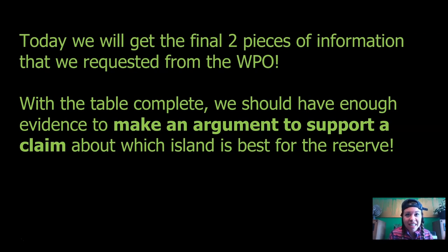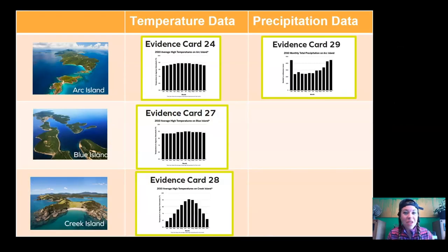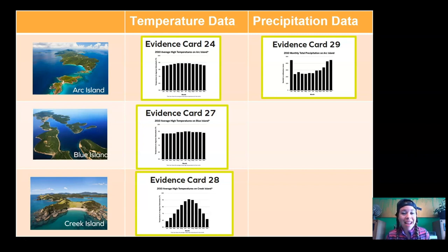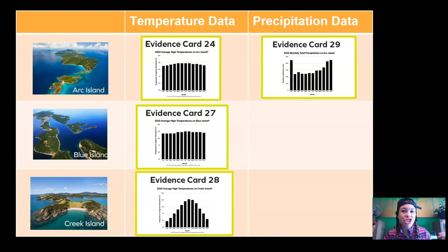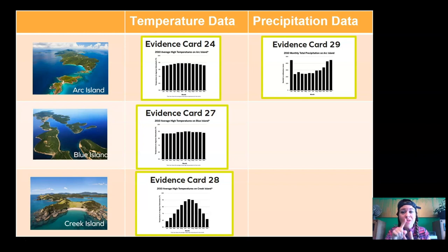We've been working so hard to get to this point. You remember that in the last episode, we took all of our evidence and we organized it into temperature data and precipitation data. We decided that in order for evidence to be considered strong evidence towards our claim, it has to be a year's worth of data. We can't make a decision about where to put the orangutan reserve based off one day or one month of data, because temperature and precipitation can change seasonally. We need a place that is hot and rainy all year long in order for the orangutans to be happy and survive there.